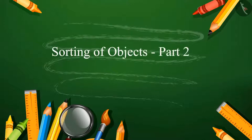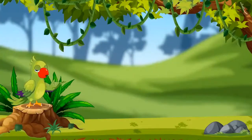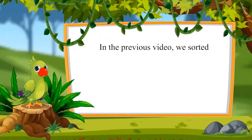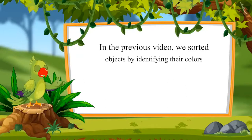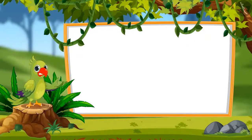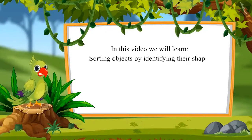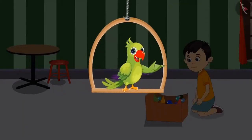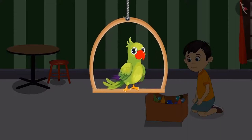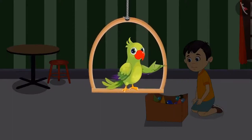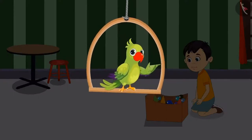Sorting of objects — Part 2. Hello children. In the previous video, we sorted objects by identifying their colors. In this video, we will learn sorting objects by identifying their shapes. Yesterday, Chotu learned to sort things according to colors. Today he remembered that his snake and ladder pieces and his marbles are kept together, so he thought of separating them.